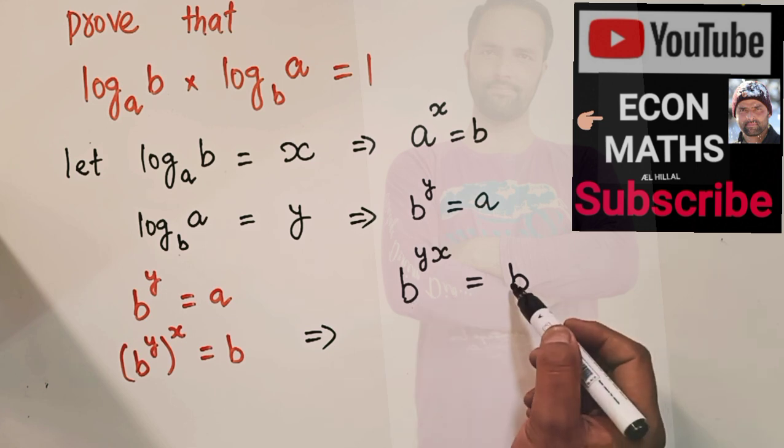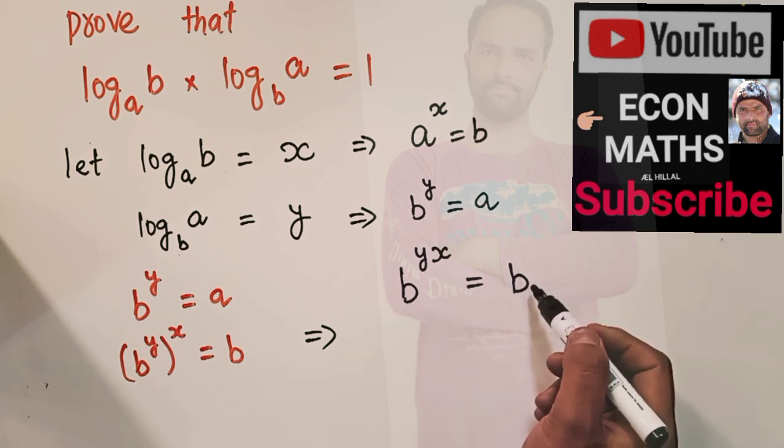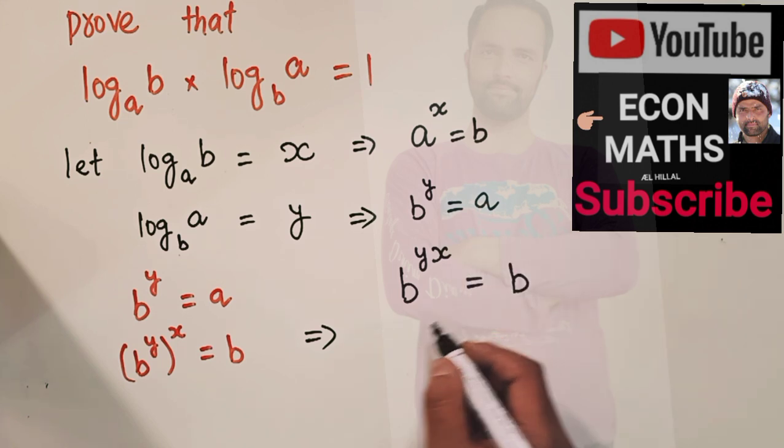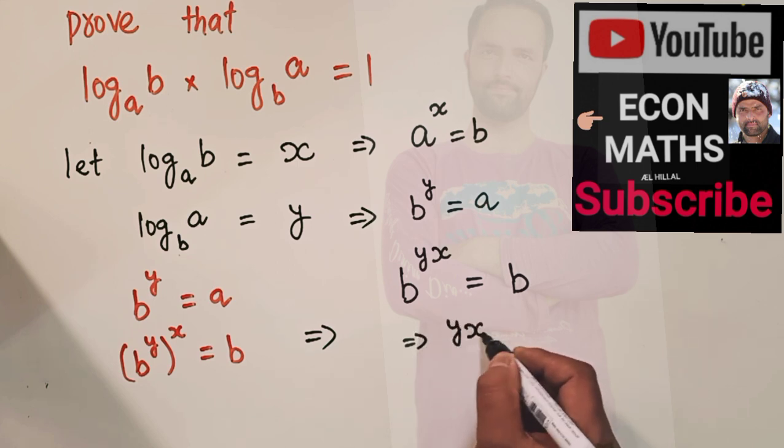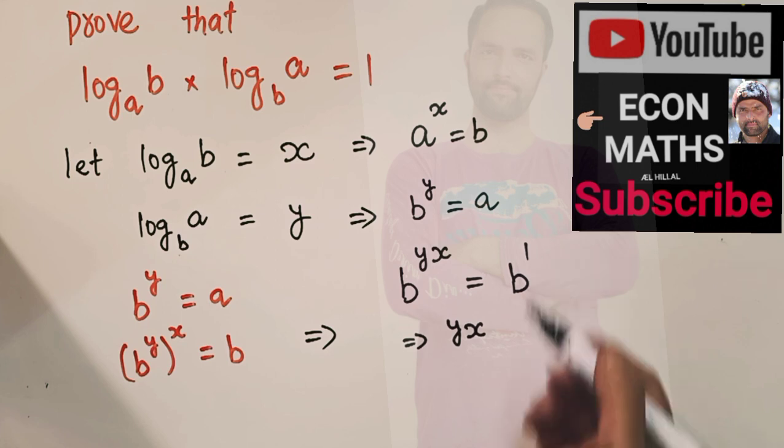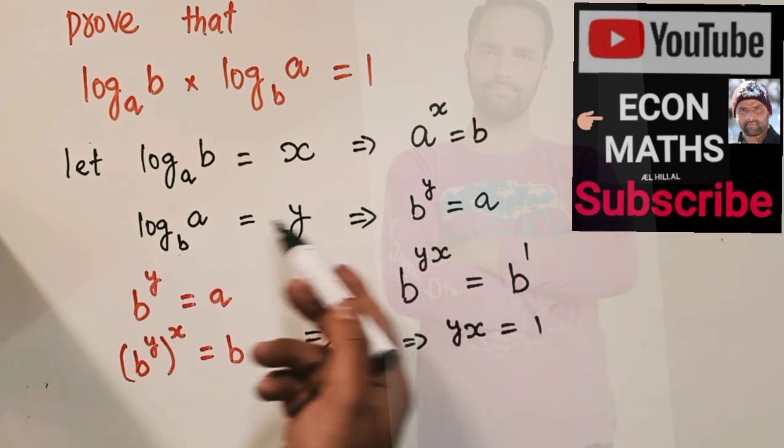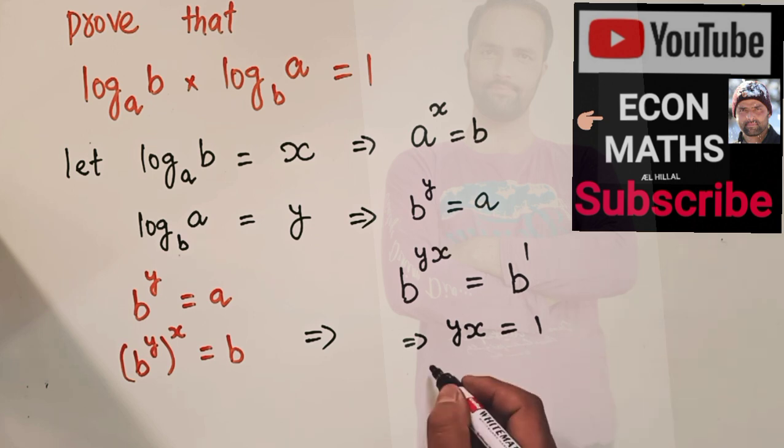Since we have same terms on both sides, we can equate the exponents, which implies Y times X. The exponent here is 1, so we will equate it 1. We know Y is equal to this stuff and X is equal to this stuff, so we can write it in this fashion also.